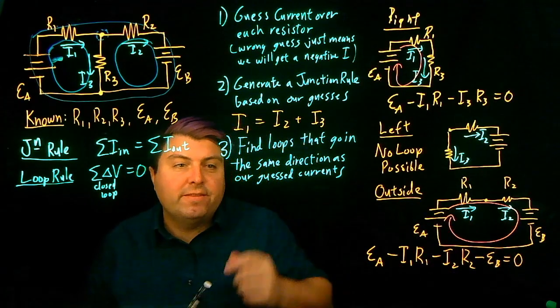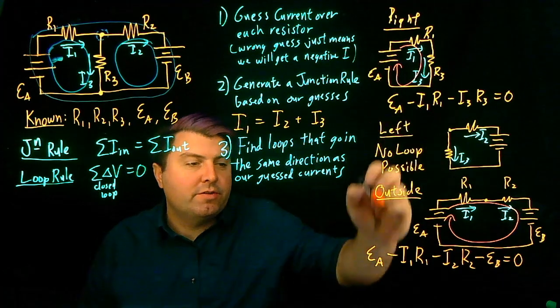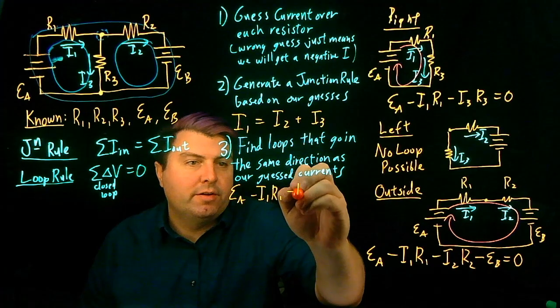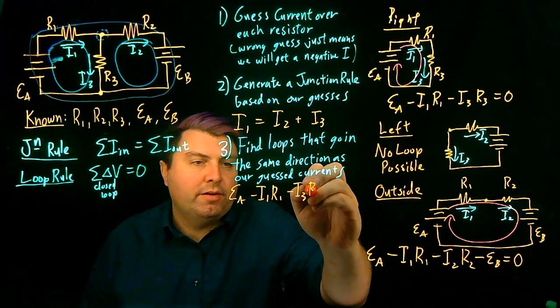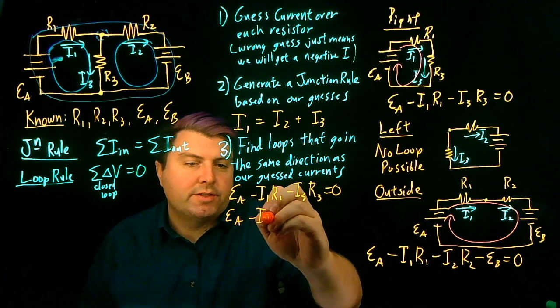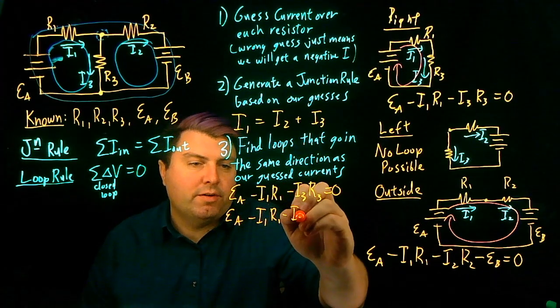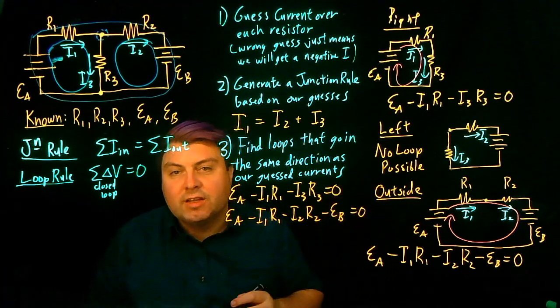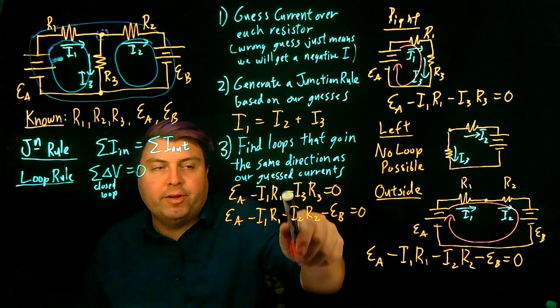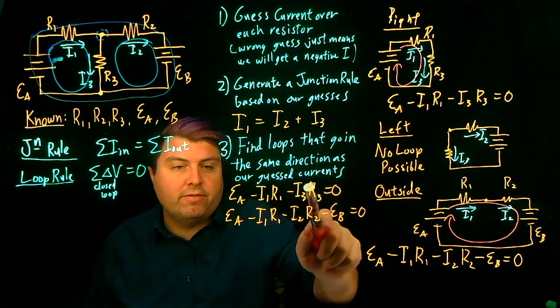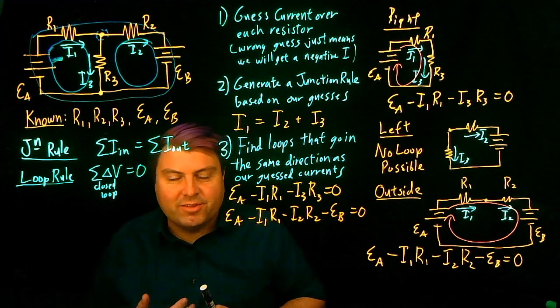So then we get our next two equations, this one and this one. EA minus I1 R1 minus I3 R3 equals zero. And EA minus I1 R1 minus I2 R2 minus EB equals zero. And now we have our three equations and our three unknowns, I1, I2, I3, and we can go and solve this.